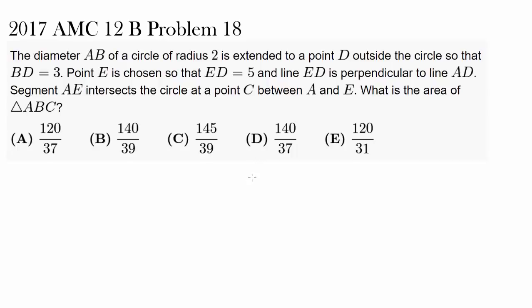This is 2017 AMC 12B problem 18. Let's read the question. The diameter AB of a circle of radius 2 is extended to a point D outside the circle so that BD is equal to 3.